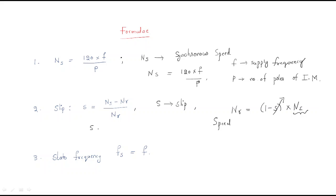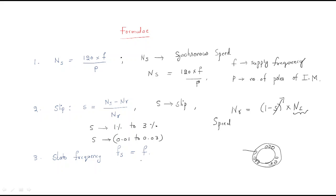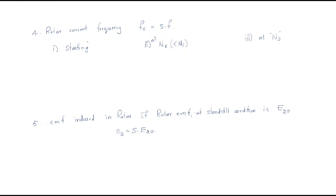Generally, slip value is 1% to 3%, that is 0.01 to 0.03. Next, the stator frequency — we are giving supply to the stator, so stator frequency means the applied frequency to the stator. The stator frequency f is nothing but the supply frequency directly, because supply is given to the stator.